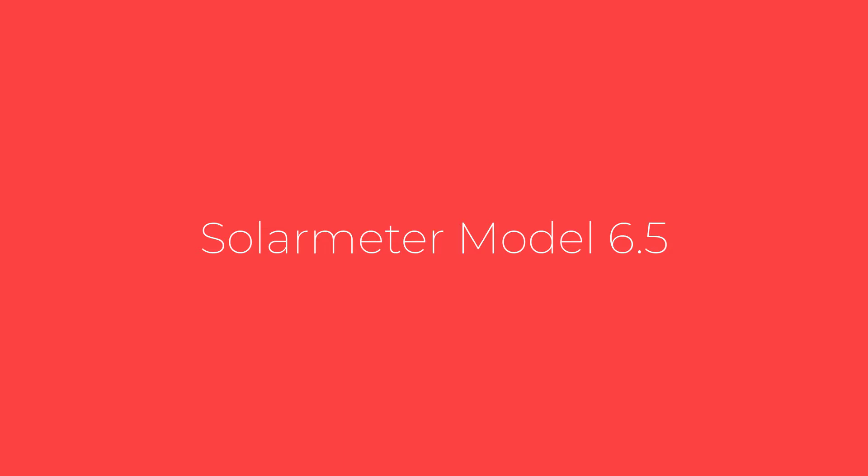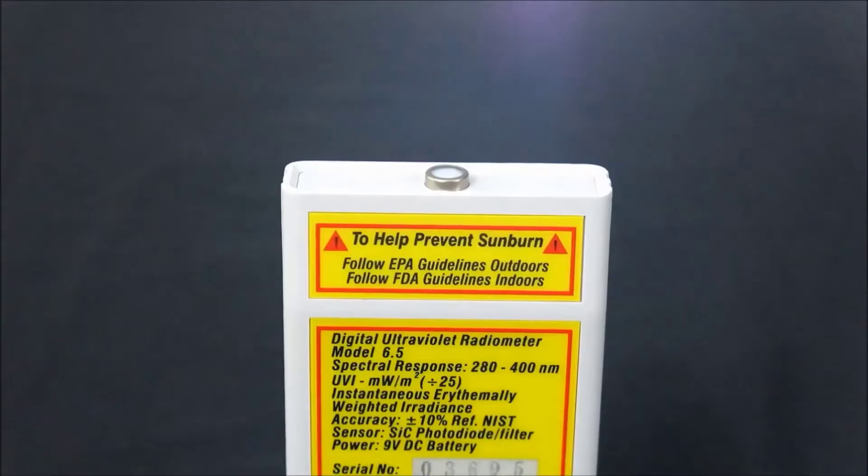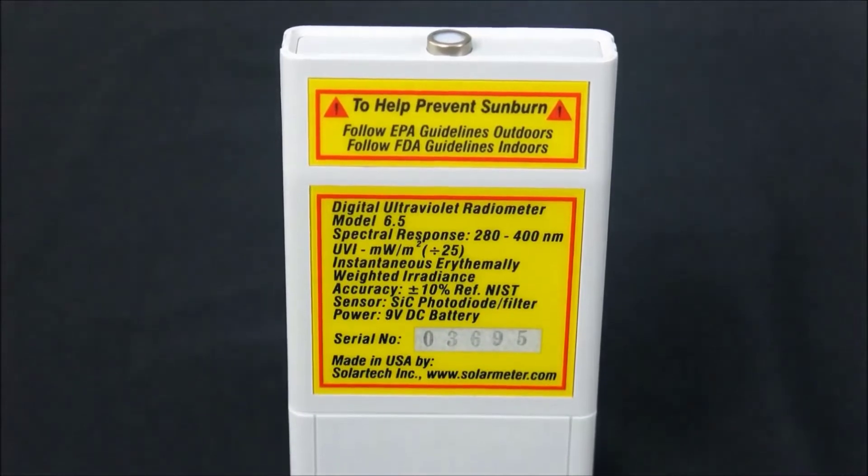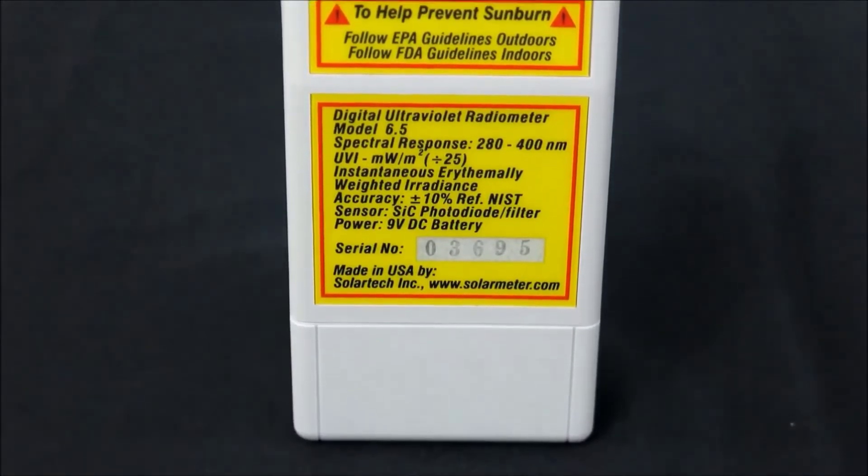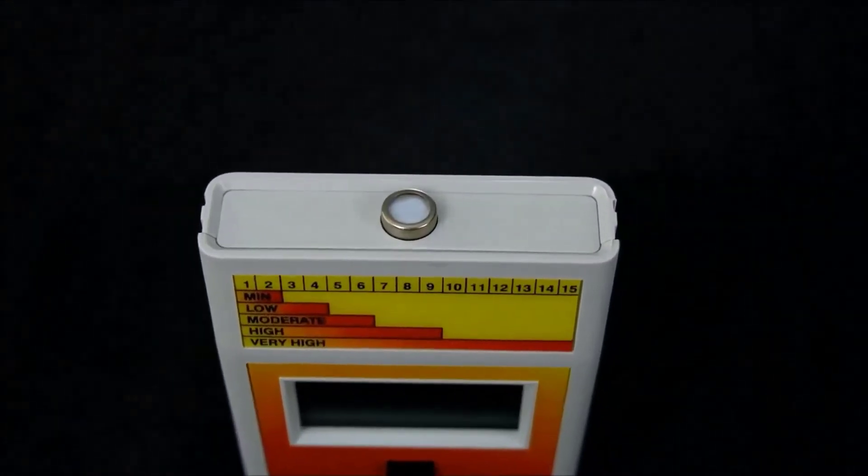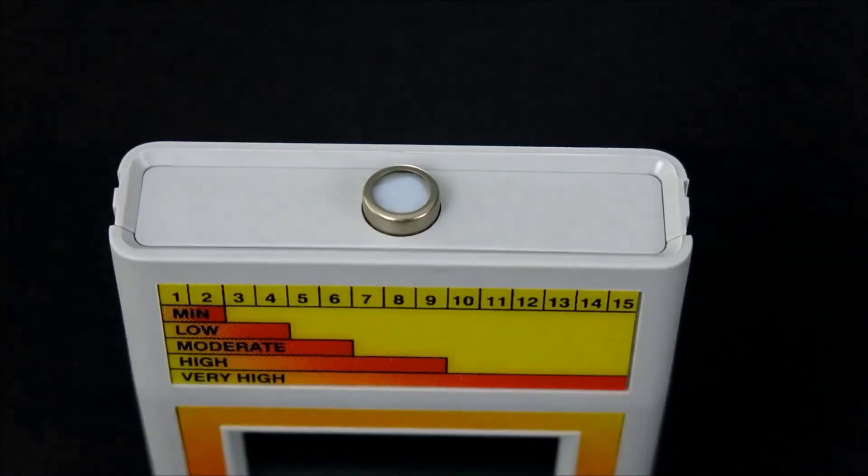Number 3: Solar Meter Model 6.5. The Solar Meter Model 6.5 comes with a NIST traceable calibration certificate, so you can rest assured its accuracy is unquestionable. It's designed to measure wavelengths between 280 and 400 nanometers.